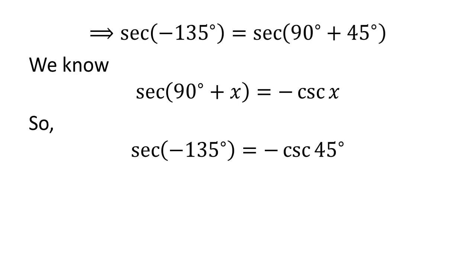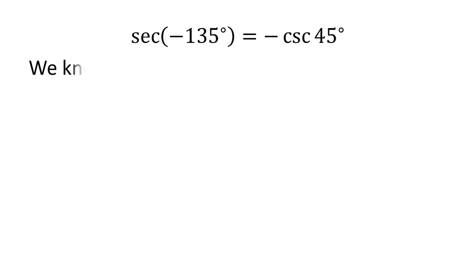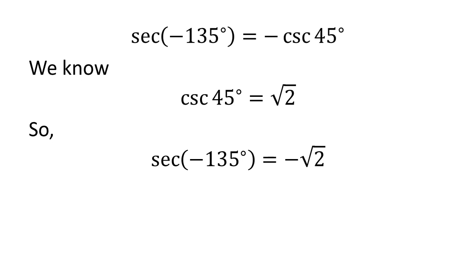Let us apply the above identity for secant of minus 135 degrees, where x is 45 degrees. So secant of minus 135 degrees is equal to minus cosecant of 45 degrees. We know the value of cosecant of 45 degrees is equal to square root of 2. So the value of secant of minus 135 degrees is equal to minus square root of 2.